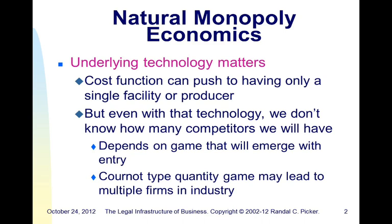Natural monopoly is ultimately driven by the shape of the underlying cost function. I went through an example in class with a very simple cost function — one where we've got fixed costs and then a flat marginal cost. If that's our cost function, then having a single facility do all of the production turns out to be the cheapest way to do any level of production. As soon as we have more than one facility, we've effectively spent those fixed startup costs a second time, without buying anything in terms of production opportunities.